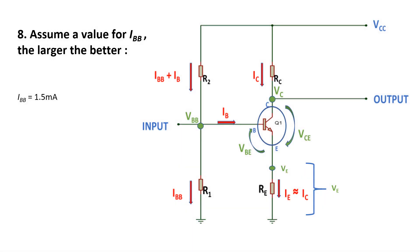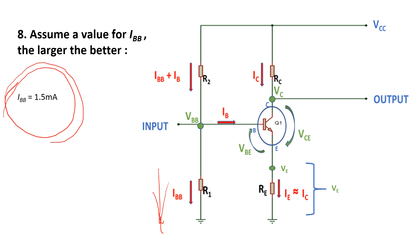Step number eight: assume a value for IBB — how much current will flow through this voltage divider path. We assume 1.5 milliampere. A slightly larger value gives a better result, and this is totally up to the designer.